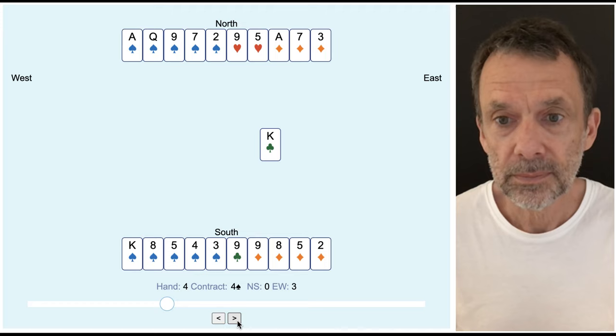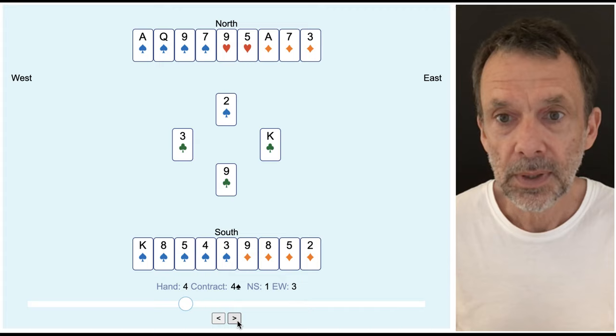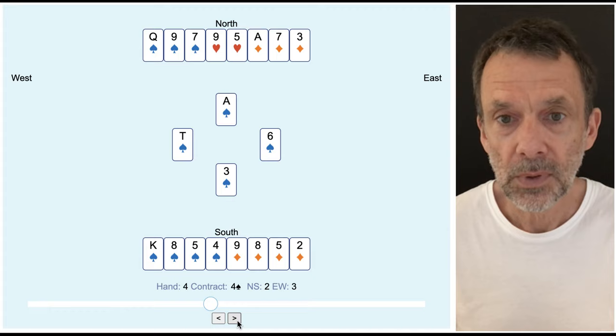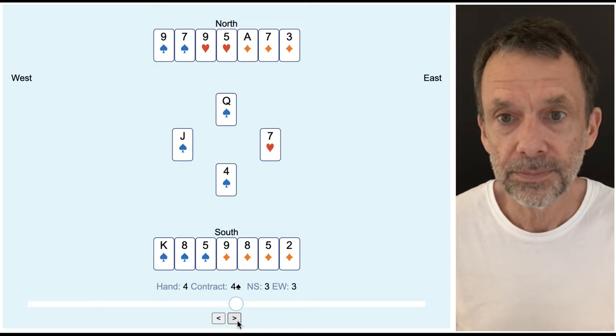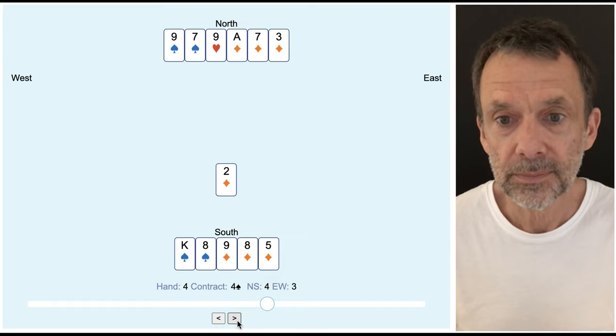Okay, I can ruff that one. Let's draw a couple rounds of trumps. One more round of trumps. That's all the trumps gone. I can ruff a heart.